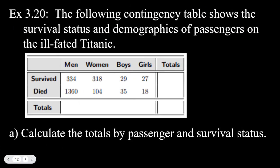Example 3.20, the following contingency table shows the survival status and the demographics of passengers on the ill-fated Titanic. Part A, calculate the totals by passenger and survival status.